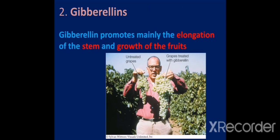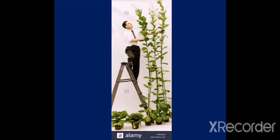Number 2, after auxins, we are going to talk about gibberellins. Gibberellins promote mainly the elongation of the stem and growth of the fruits. Here you can see untreated grapes in the right hand of this person and treated with gibberellin fruits in his left hand. You can see the difference. Here, normal cabbages are shown in the left side. But cabbages treated with gibberellins is shown by the right side. So what is your idea about this type of cabbage?